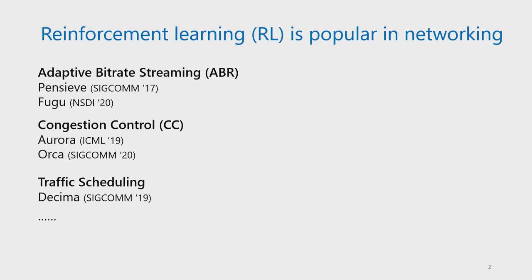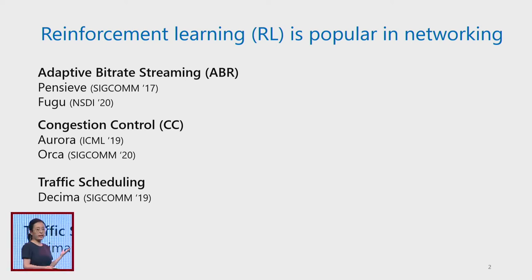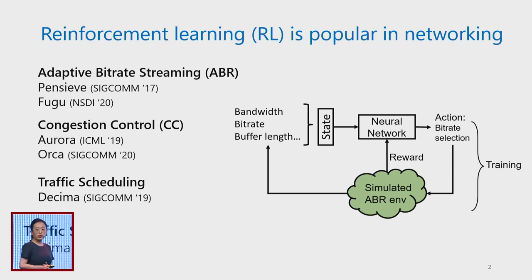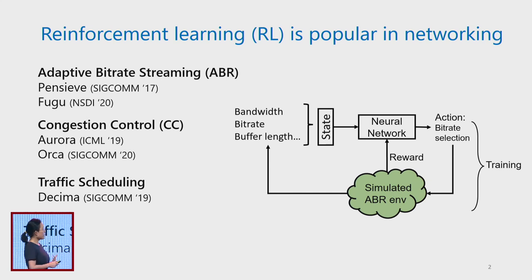Reinforcement learning research has been popular in networking — for example, in adaptive bitrate streaming, congestion control, traffic scheduling, and so on. Here is a quick example of how RL works in the ABR system. We have a simulated ABR environment and train a neural network that observes state such as bandwidth, bitrate, and buffer length, then makes an action as bitrate selection. The neural network optimizes the reward returned from the environment. This is called the training stage.